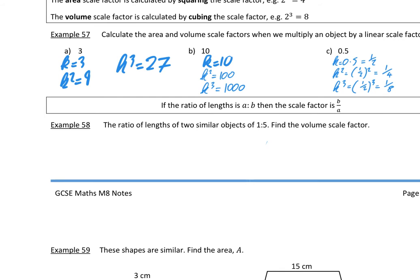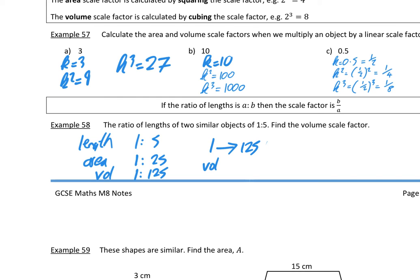A nice trick: if the ratio of lengths of two similar objects is 1 to 5, find the volume scale factor. For length, the ratio is 1 to 5. For area, you square both — it would be 1 to 25. For volume, you cube both: 1 cubed is 1, and 5 cubed is 125 — so the ratio is 1 to 125. That means 1 goes to 125, so your volume scale factor is 125 divided by 1, which is 125.